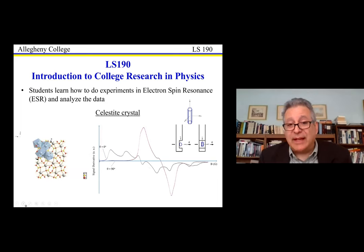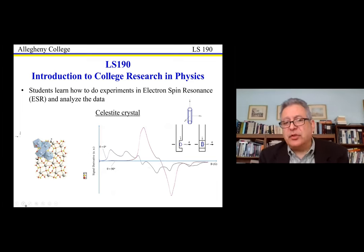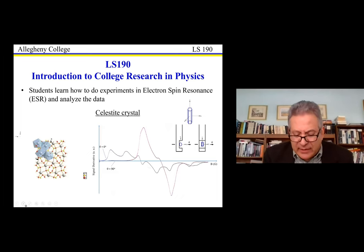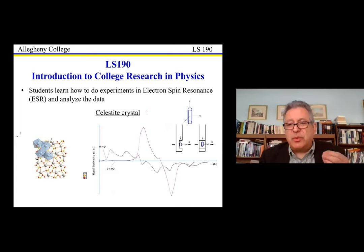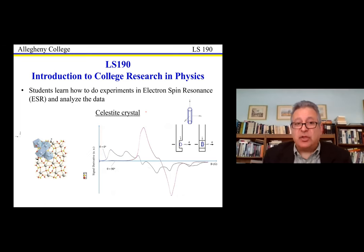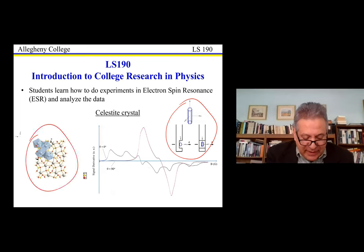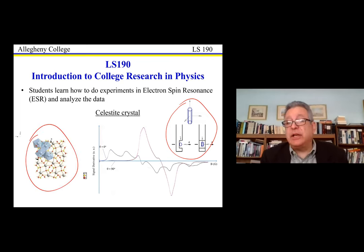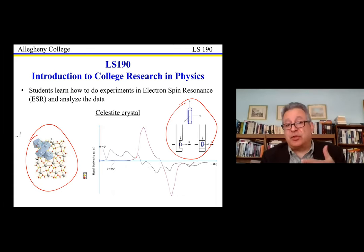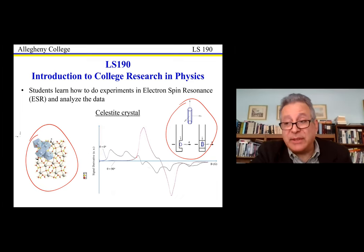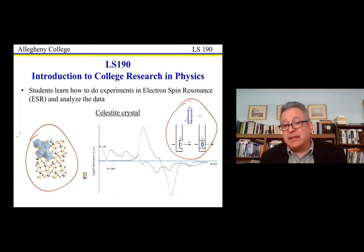Another example we started this summer is the celestite crystal — a project with a research institute where we try to understand how natural precious gems collected from different parts of the world have their properties determined by environmental conditions. We took a crystal of celestite and put it on supports that allow us to rotate the crystal. The signals we get depend on the orientation of the crystal, and students learn why the signal differs depending on how we orient the crystal inside the magnetic field.